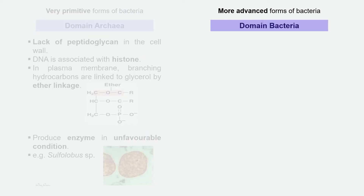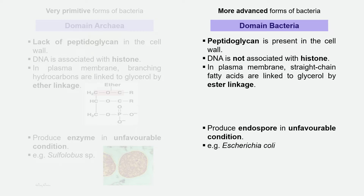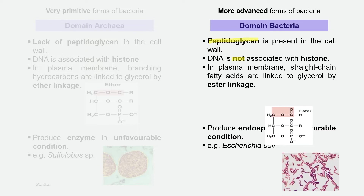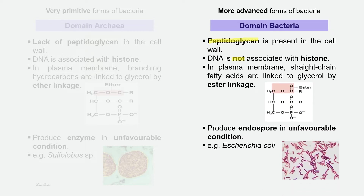Domain Bacteria contains bacteria which are more advanced. The cell wall of these bacteria contains peptidoglycan, but the genetic material DNA is not associated with histone protein. The phospholipid molecule in the plasma membrane shows that the three-carbon glycerol is linked to a fatty acid through an ester linkage.